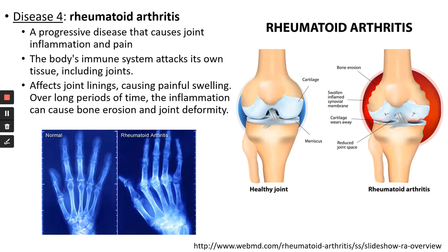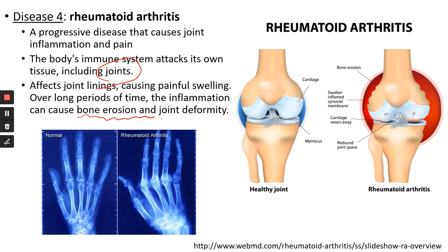The last disease is rheumatoid arthritis — also a type of arthritis, but caused by your own body's immune system attacking its own tissue, making it an autoimmune disease. The immune system attacks tissues including the joints, and unlike osteoarthritis which only affects the cartilage, rheumatoid arthritis attacks all kinds of tissues in the joint. You may have bone erosion that eventually leads to joint deformity, with joint inflammation and a lot of pain.